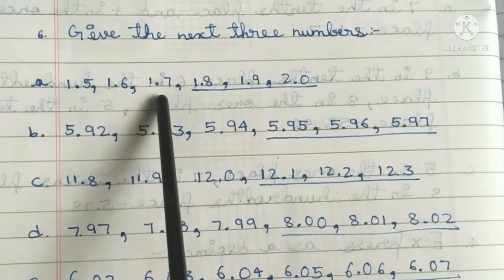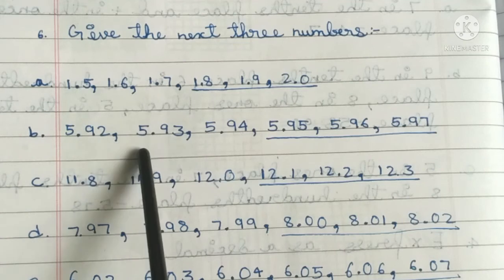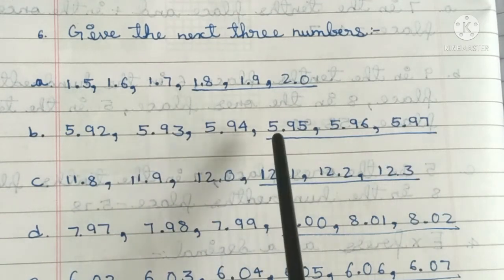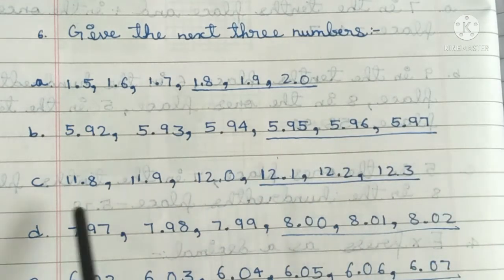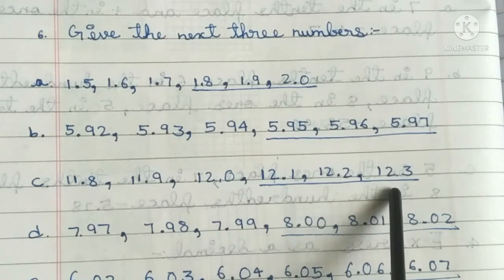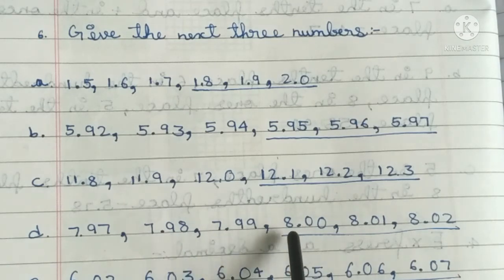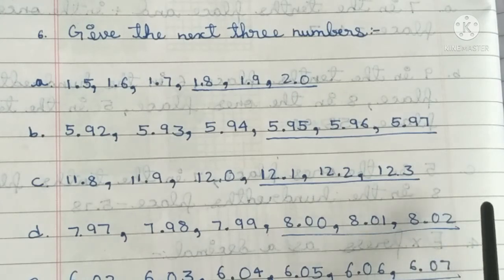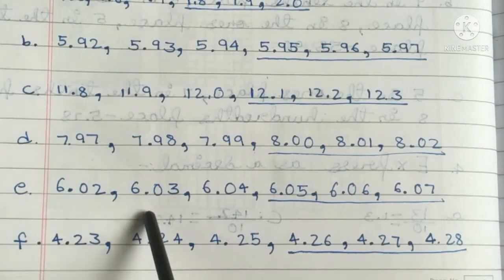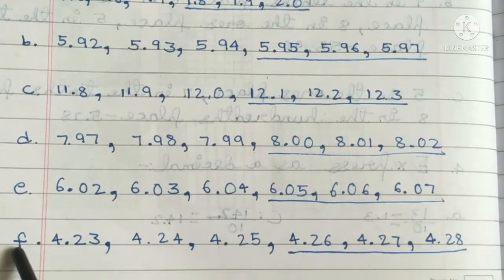After that, 1.8, 1.9, 2.0. Second one: 5.92, 5.93, 5.94, after this 5.95, 5.96, 5.97. Third one: 11.8, 11.9, 12.0, after that 12.1, 12.2, 12.3. Fourth one: 7.97, 7.98, 7.99, after that 8.00, 8.01, 8.02. Fifth one: 6.02, 6.03, 6.04, after that 6.05, 6.06, 6.07. Sixth one: 4.23, 4.24, 4.25, after that 4.26, 4.27, 4.28.